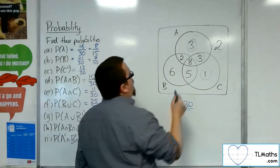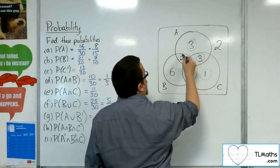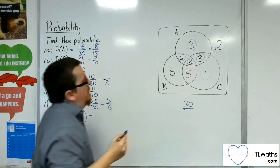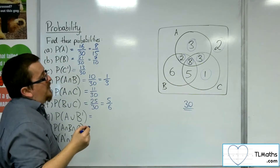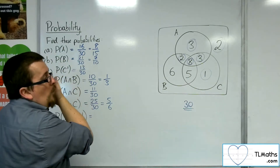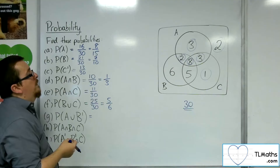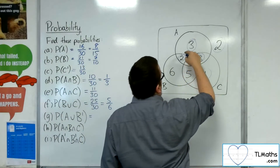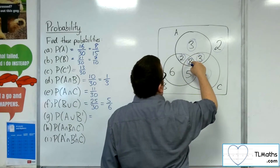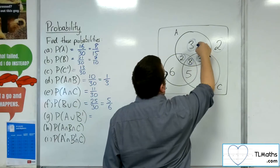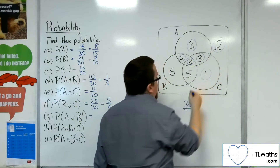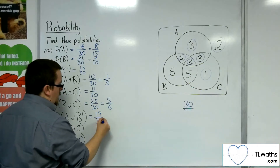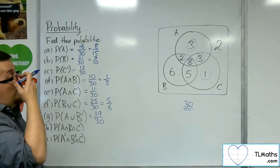Anything that's in A is the 3, the 2, and the 8. So including those together we've got: 2 and 8 so 10, 13, 16, 18, 19. So that would be 19 out of 30.